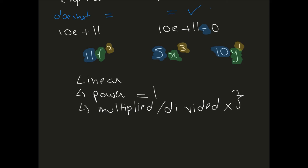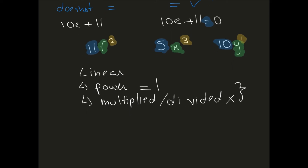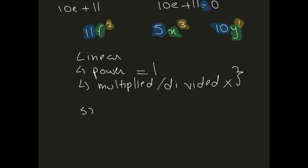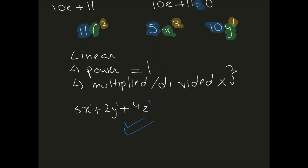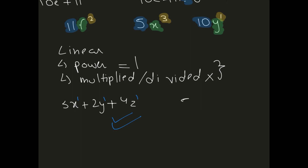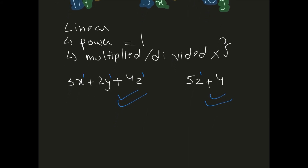For example, 3x plus 2y plus 4z is a linear equation because x, y, and z each have a power of 1. Similarly, 5z plus 4 is linear because z has a power of 1. But 4x squared plus 3 is not a linear equation because x has a power of 2, not 1.